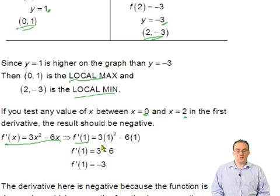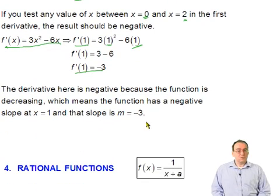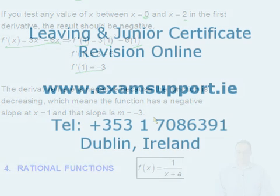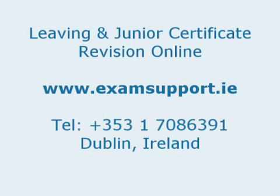f'(1) = 3(1²) - 6(1), which is equal to -3. And this is exactly the case. So what the calculus is doing is it tells us exactly how the graph is behaving. And the result, f'(1) = -3, a negative slope, is completely consistent with the graph. Just to reiterate that point, the derivative here is negative because the function is decreasing, which means the function has a negative slope when x is 1, and that slope has a value of -3.